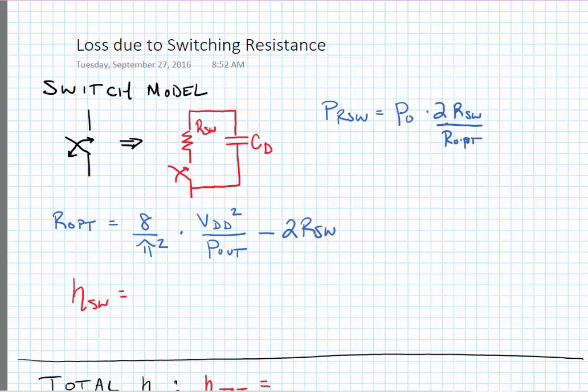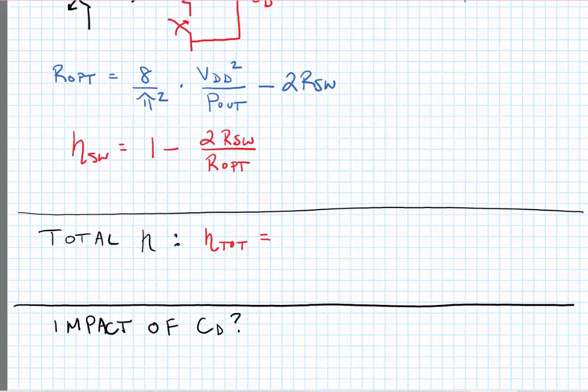We can then go on to find the efficiency of the switch as being equal to one minus two times R switch divided by ROPT. The total efficiency is given as the product of all of the efficiencies of a power amplifier. So in the case of the class F, it would be the efficiency of the switch times the efficiency of the non-ideal class F that is due to non-ideal harmonic termination times the efficiency of the matching network.